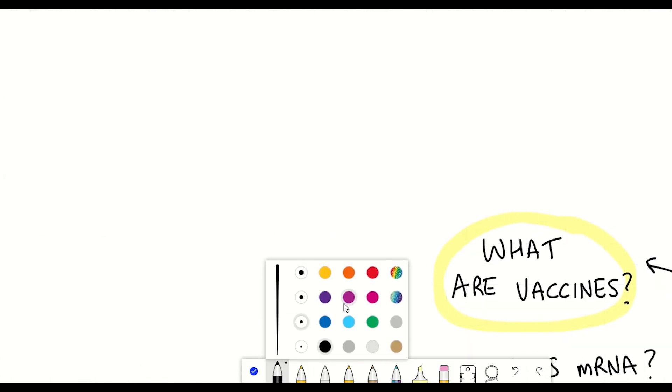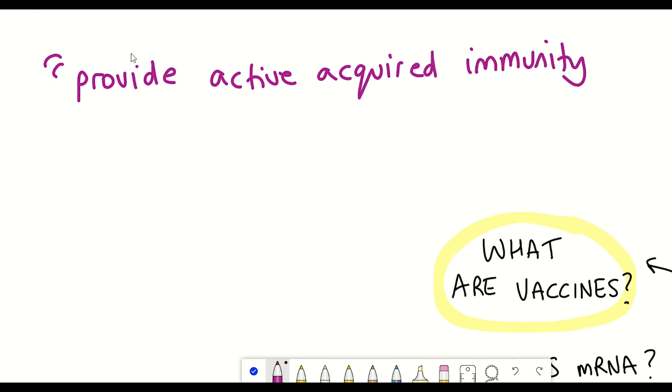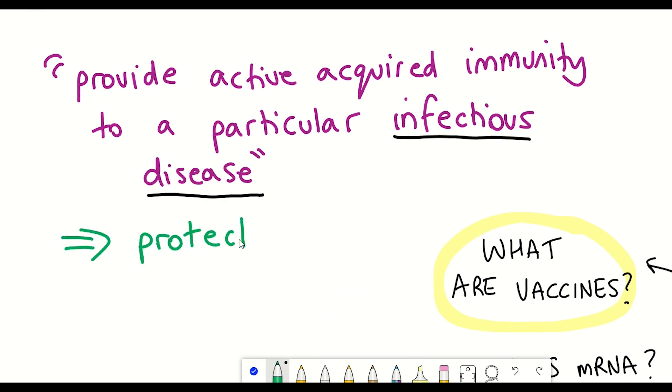Well, the purpose of a vaccine is to provide active acquired immunity to particular infectious diseases. Therefore, if that person was infected by that same infectious disease again in the future, they have some defense systems in place to prevent or ameliorate the effects of that infection.